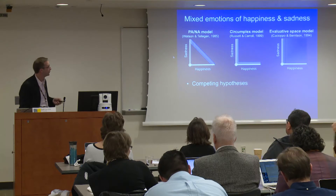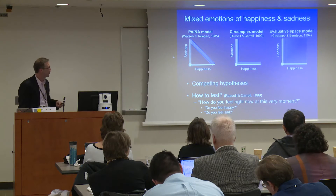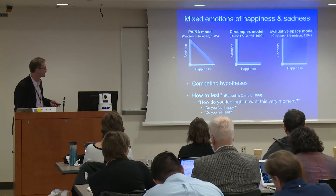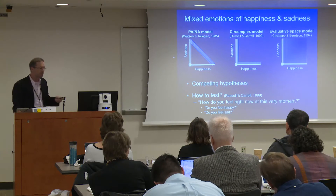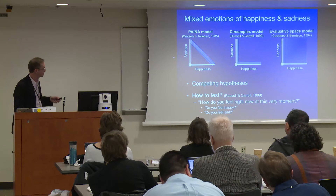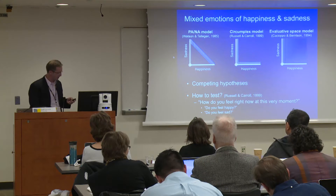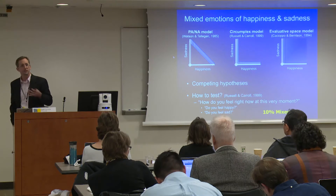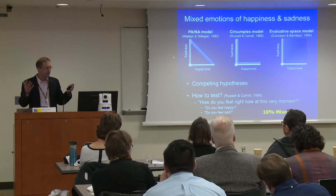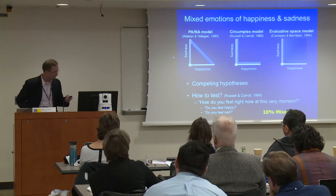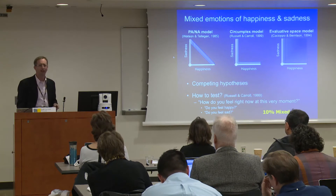How are we going to figure out whether people can feel happy and sad at the same time? Russell started out simply — just ask people how they feel right now and see whether they say they're feeling both happy and sad. In a classroom setting, only 10% of people reported these mixed emotions. When we think about measurement error and acquiescence biases, 10% saying yes to both is pretty close to 0%. So initial evidence that happiness and sadness are mutually exclusive in a classroom setting.